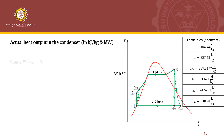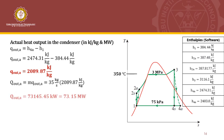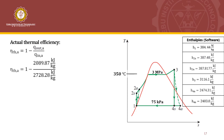For the actual heat output in the condenser, we use H4A as the inlet and H1 as the exit. Substituting the values, the actual heat output is 2,089.87 kJ per kg. Multiplying by the mass flow rate, the actual power rejected in the condenser is 73.15 megawatt. Since we have the actual heat input and heat output, we can compute the actual thermal efficiency, which is 0.234 or 23.4%.